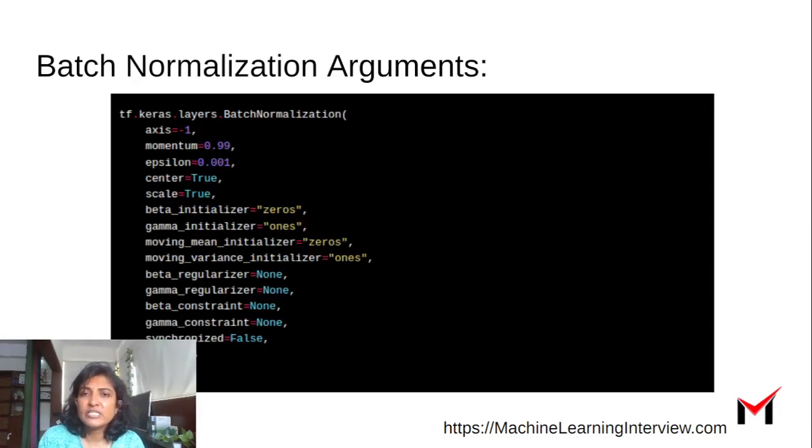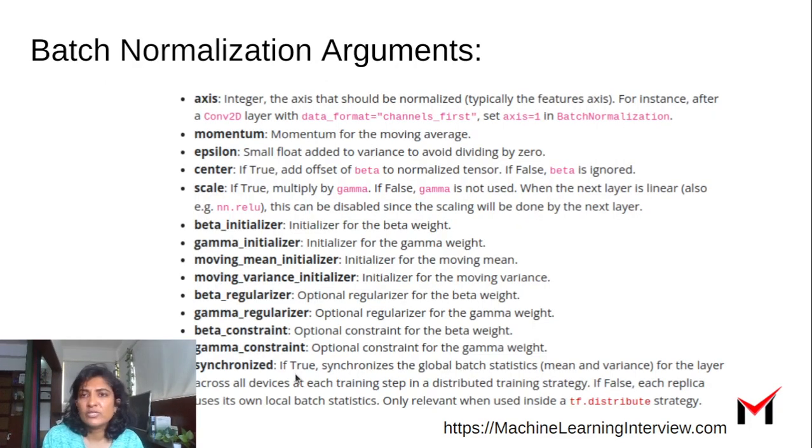When you're doing the batch normalization, there are a bunch of parameters you can play with. For instance, you can have the mean initializer, variance initializer, beta initializer, gamma initializer, and so on. You can give the epsilon value and there are a bunch of different other parameters. You can see the documentation to understand these parameters better.